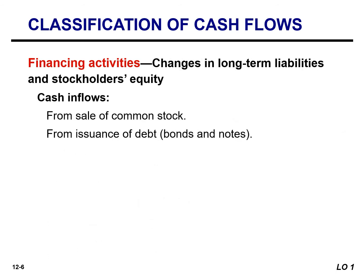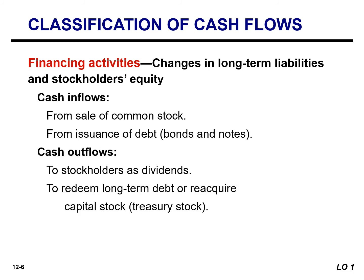The last category is financing activities. When it comes to these activities, I want you to think of the inflows as any cash received from the issuance of common stock or debt, such as bonds and notes. As far as outflows, I want you to think of any payments made to stockholders in the form of dividends, or any payments made to retire long-term debt or reacquire capital stock.